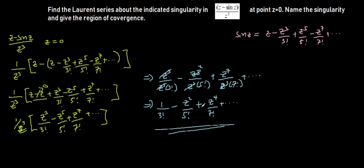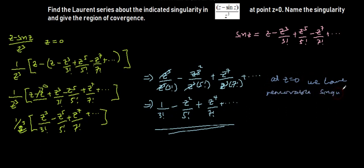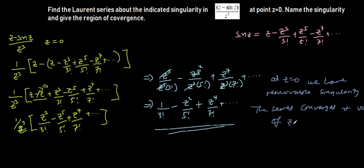We are told to name the singularity and give the region of convergence. From our answer we can see that at z equal to zero, there is no negative power of z in the Laurent series, so we have a removable singularity at z equal to zero. The series converges for all values of z.